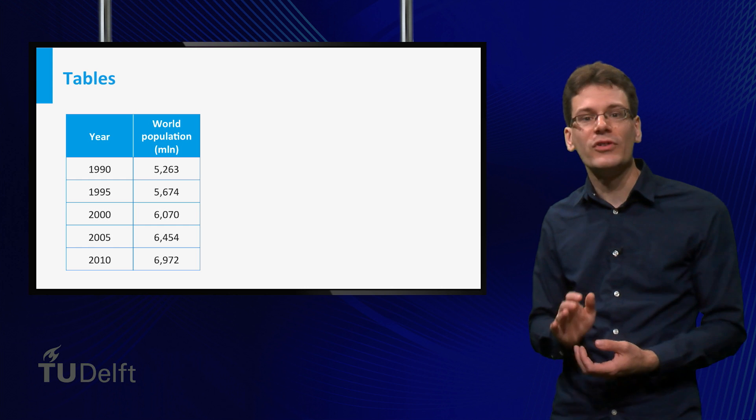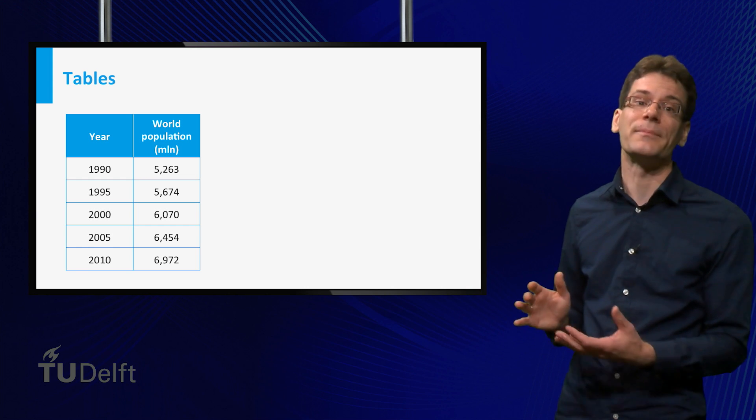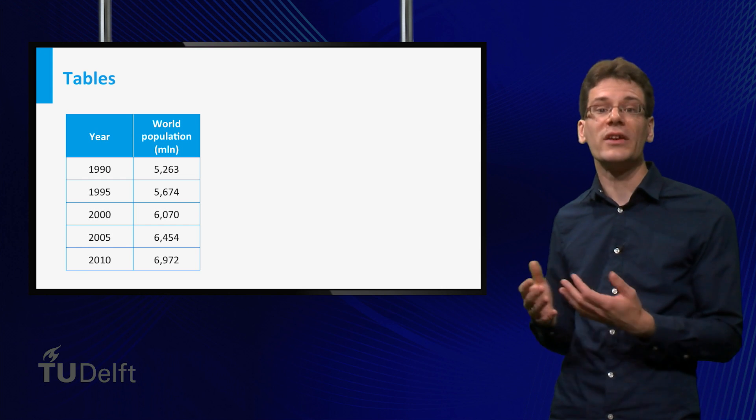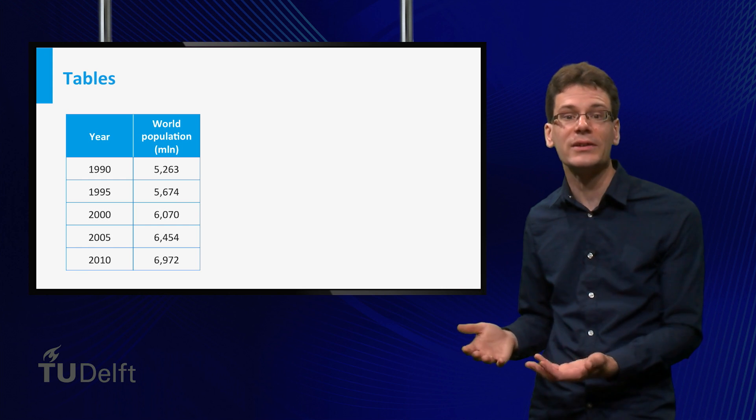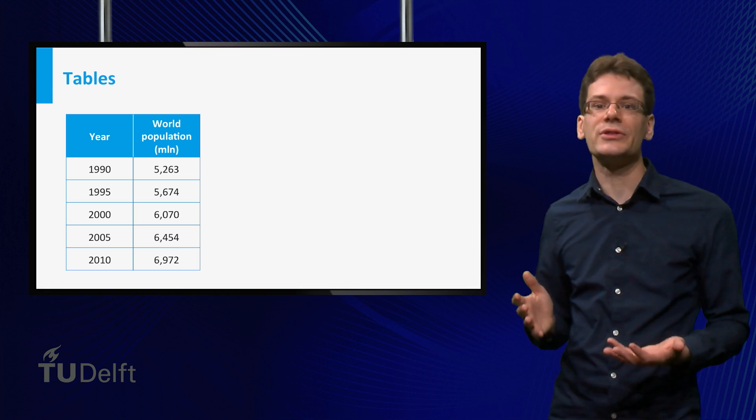A table is a convenient way to summarize dependence between quantities obtained from measurement data. For example, if you measure the world population every five years, from 1990 to 2010, this can be nicely summarized in a table.